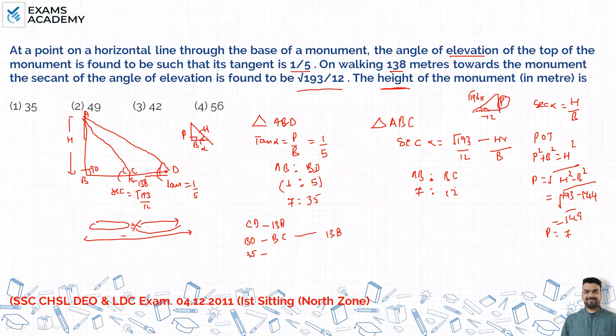BC is 12. 35 minus 12 is equal to 138, so one unit divided by, 35 minus 12 is 23. One unit value is this much.